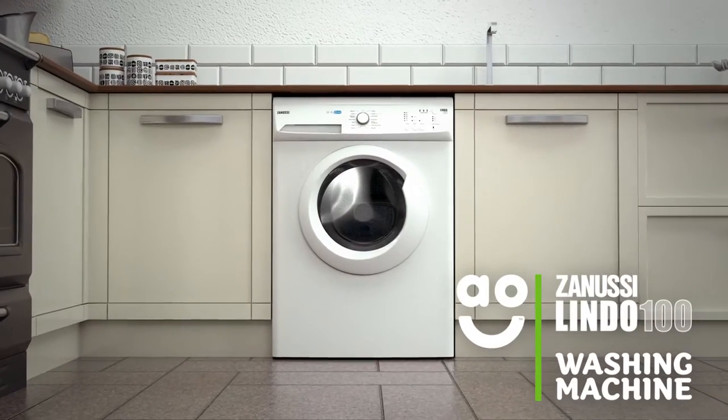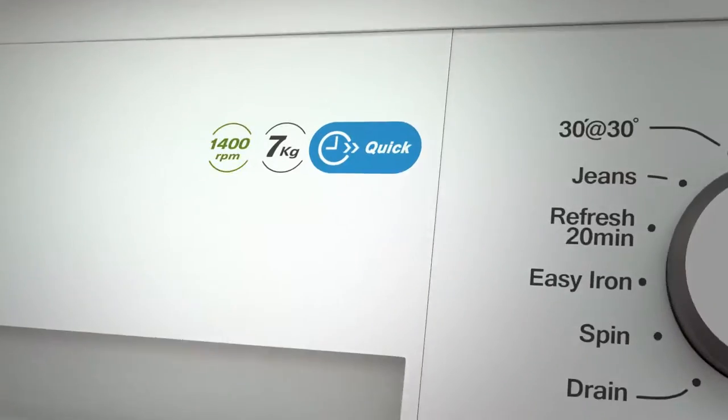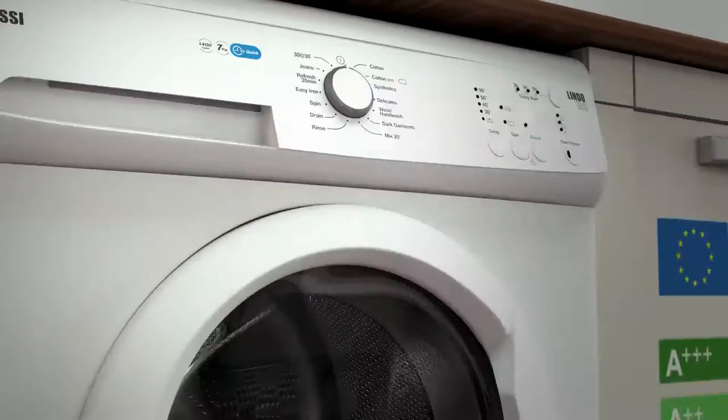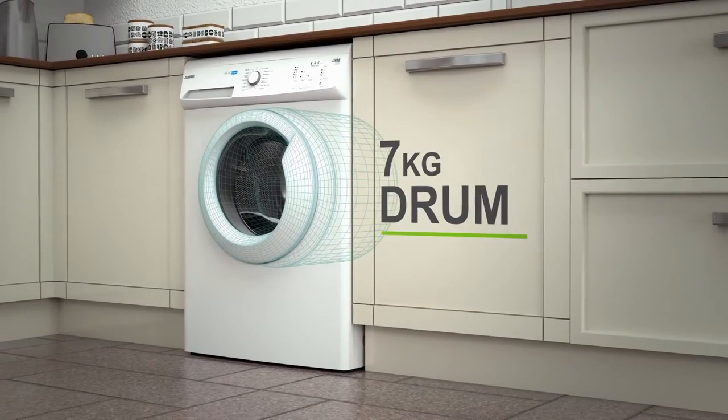This Zanussi Lindo 100 washing machine is perfect for those who want their laundry days to be fuss-free. It has a 1400 rpm spin speed, an A++ plus energy rating and a medium-sized 7kg drum.